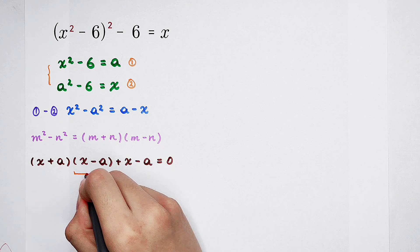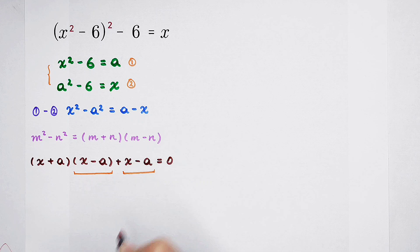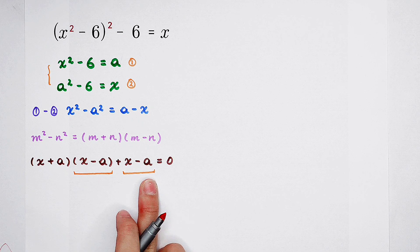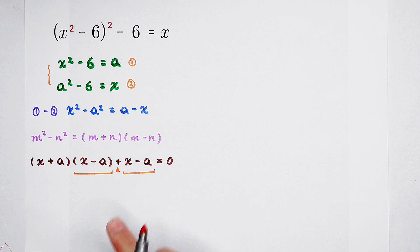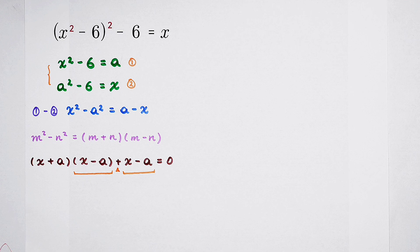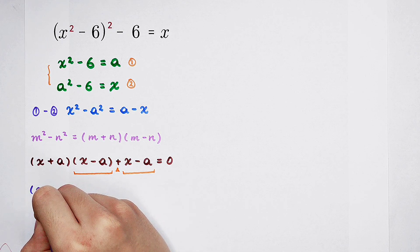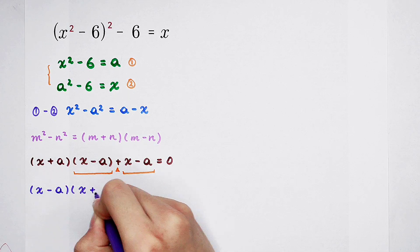So now, factorization. X minus a, take it out. We can do it. Since this is plus, not minus. So now, x minus a, and then times x plus a.